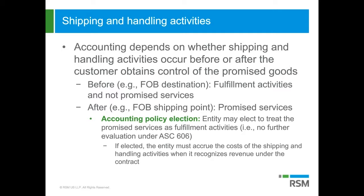ASU 2016-10 makes it clear that fulfillment activities that occur before transfer of control — such as situations where shipping terms are FOB destination — are not promised goods or services and therefore not performance obligations. But ASU 2016-10 also amends the guidance so that entities have an election on shipping and handling activities that occur after control of a good is transferred: companies can treat the activity as a fulfillment activity, or treat it as a separate performance obligation, which would mean allocating some revenue to it.